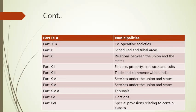Part eight explains Union territories. Part nine explains panchayats. Part nine B explains cooperative societies. Part ten explains scheduled and tribal areas. Part eleven explains the relationship between the Union and the states.